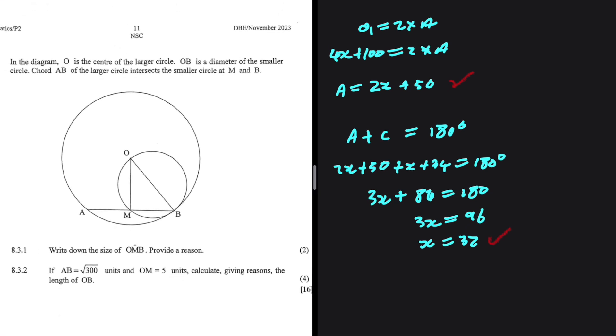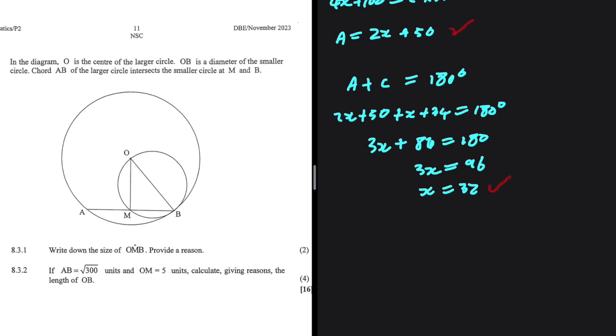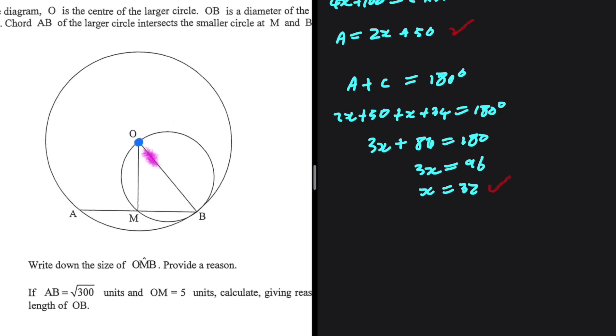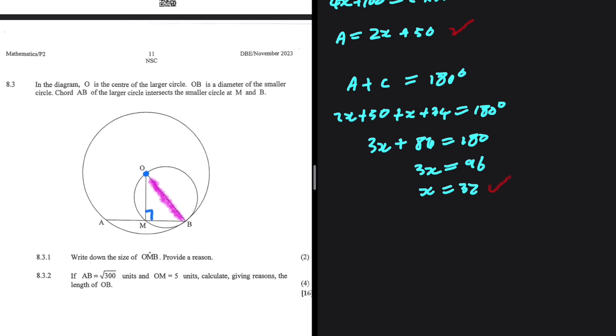That is 8.2. Let's see if we can answer 8.3. In the diagram, O is the center of the larger circle. OB is the diameter of the smaller circle. Chord AB of the larger circle intersects the smaller circle at M and B. So I'm told that AB is a diameter. As soon as I hear AB is a diameter, I know that angle M is 90—a diameter subtends 90 at the circumference.